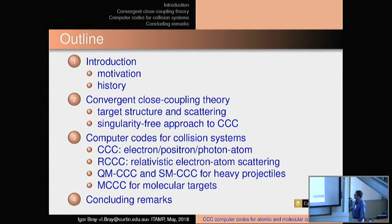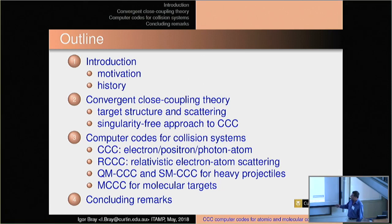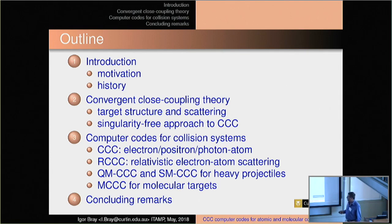I'm going to concentrate on the historical context because it gives you an idea of the rate of change of codes as they develop. I think that's important when we want to talk about utility and usability by others. The ones I'm going to concentrate on: the original started with electron scattering on atomic hydrogen. Now I can do positrons, photons on atoms, a fully relativistic Dirac-based code, and also heavy particles. The same ideas — positron, proton — only a factor of 2,000 in mass. Different code, but the ideas are the same. And the molecular code as well, entirely separate.